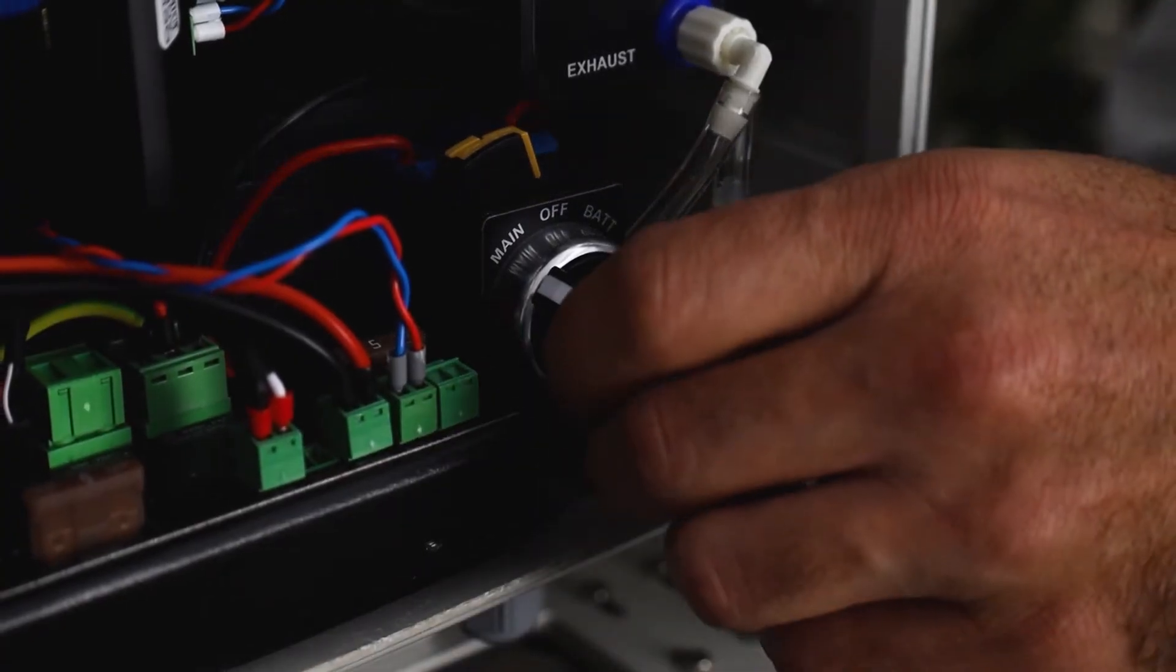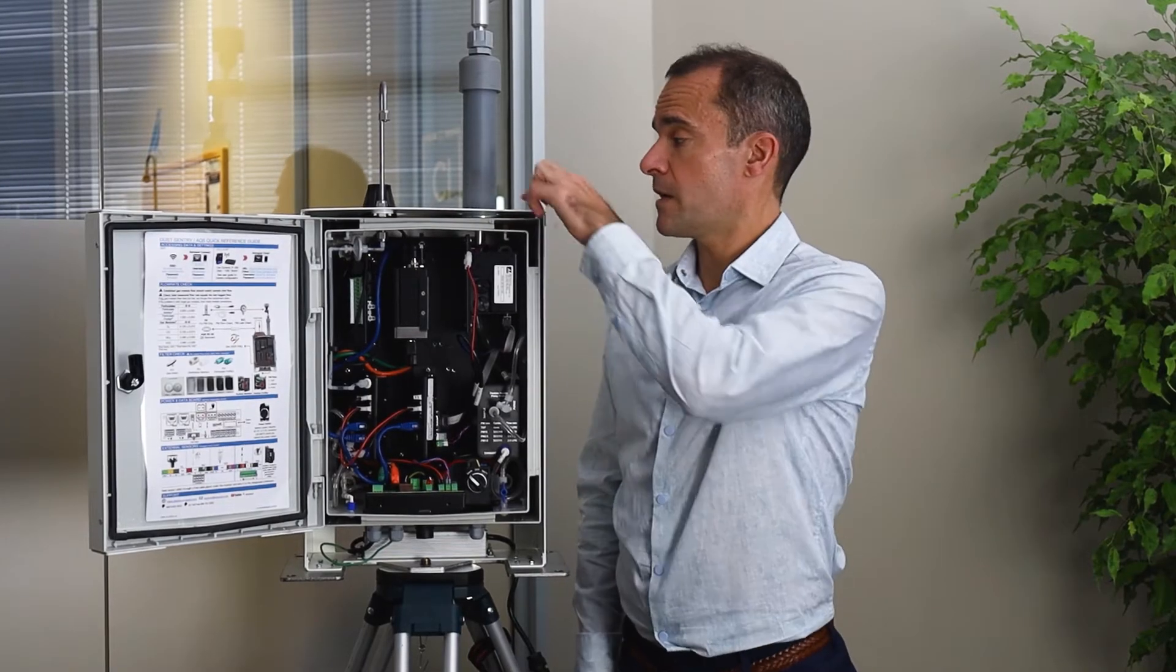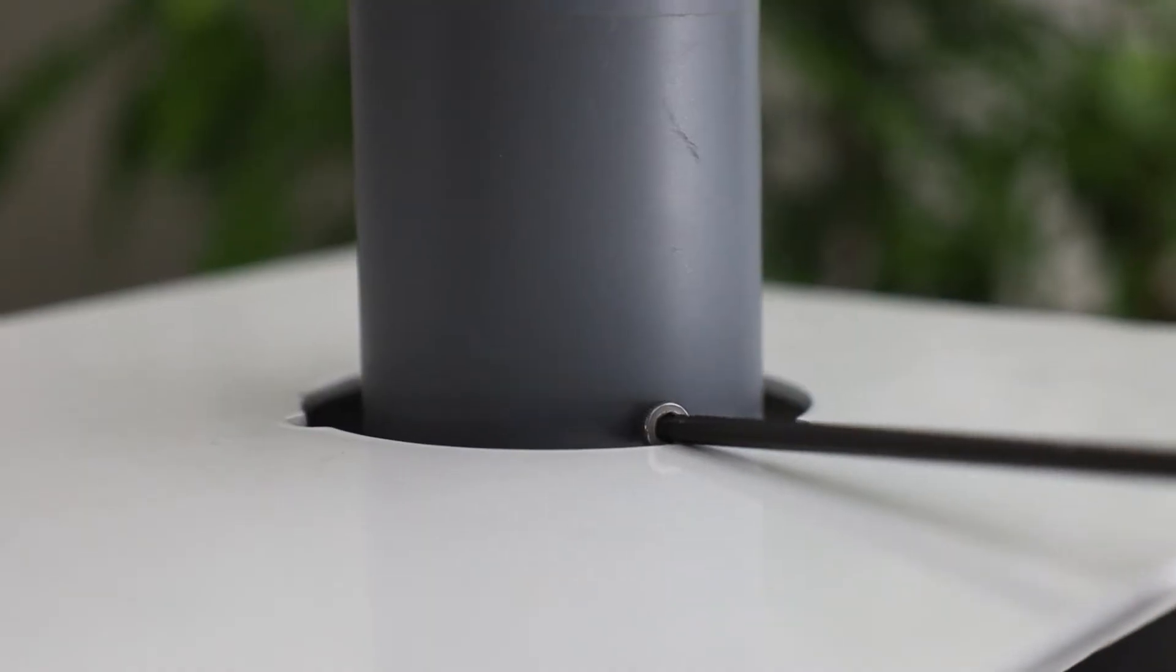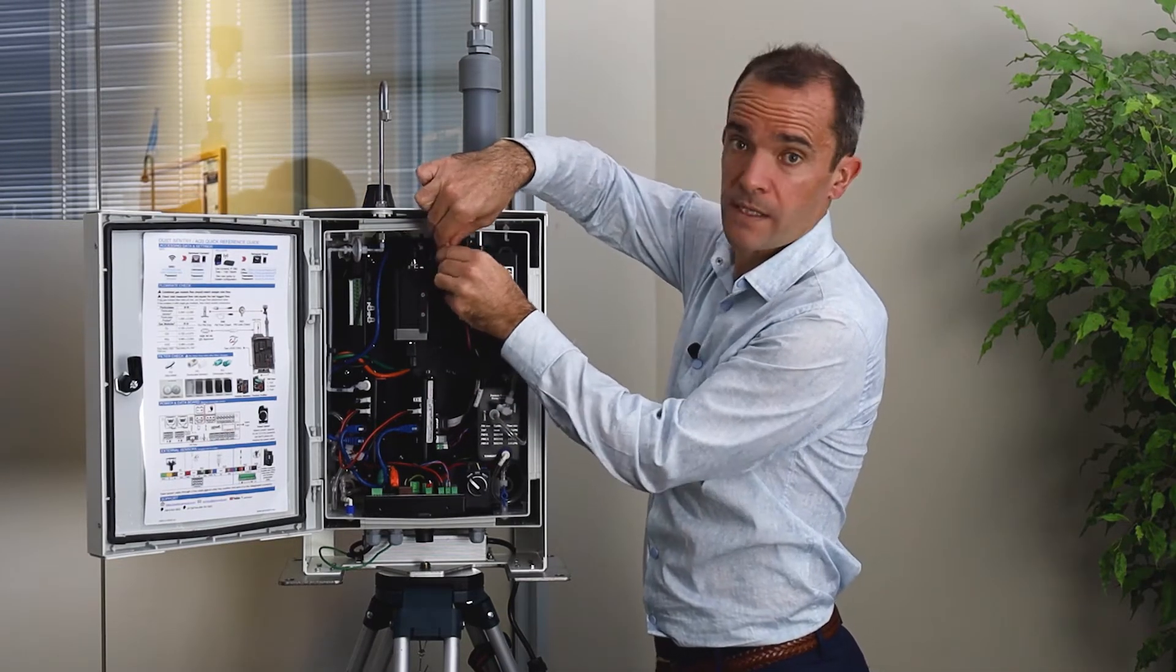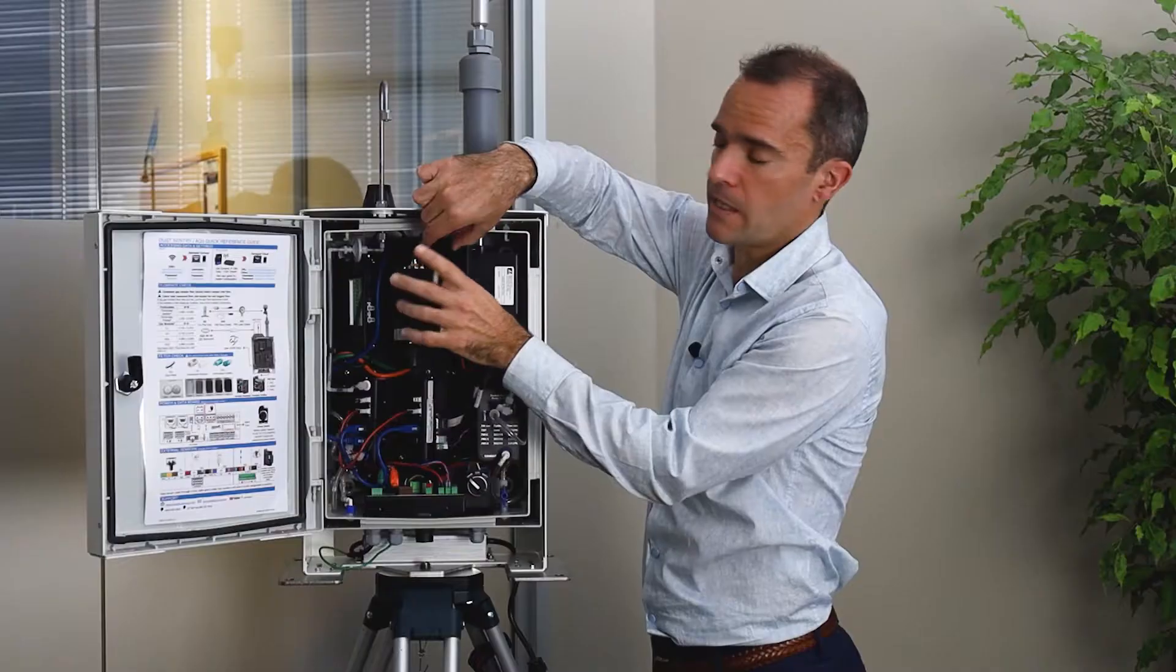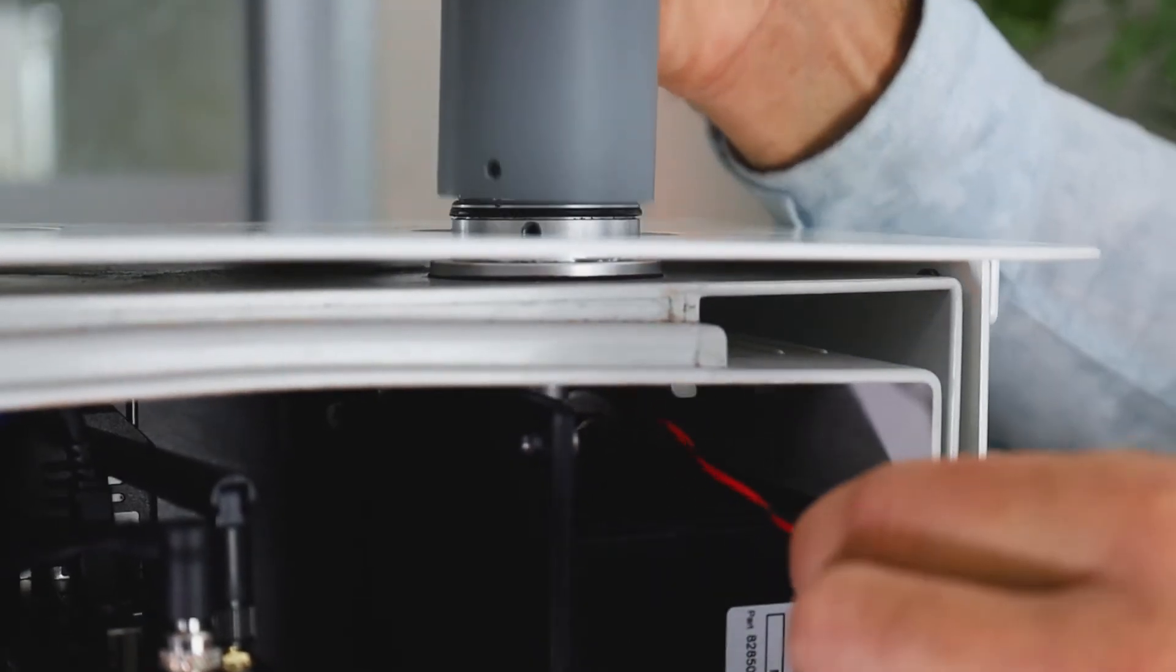We recommend you turn the power off during this replacement. The first step is to undo the three grub screws which are retaining the heated inlet, and then carefully unplug the white plug which is keeping the heated inlet, and then gently remove the inlet.